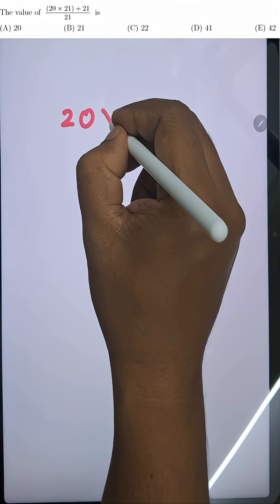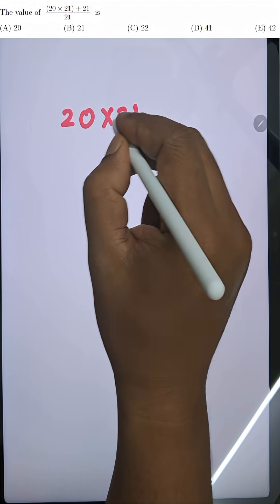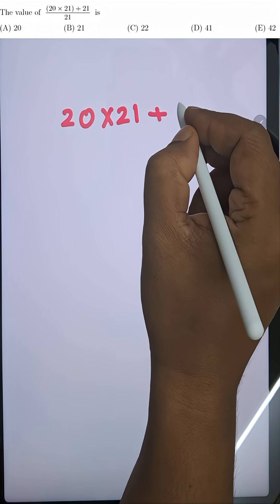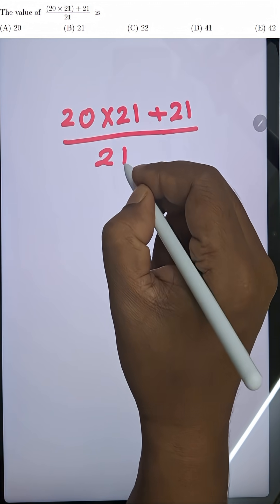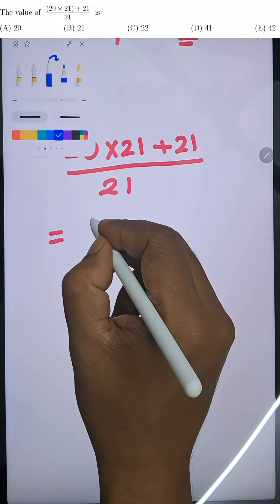Let's simplify this expression. 20 into 21 plus 21 all divided by 21. Sounds big, but watch how easily it collapses.